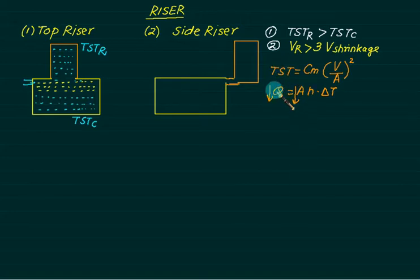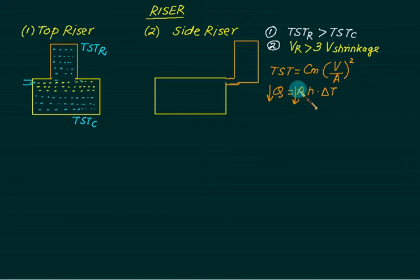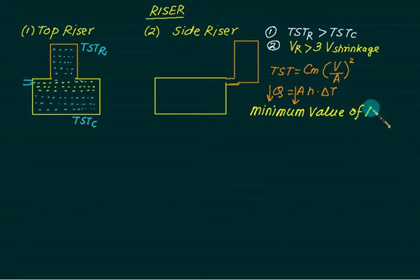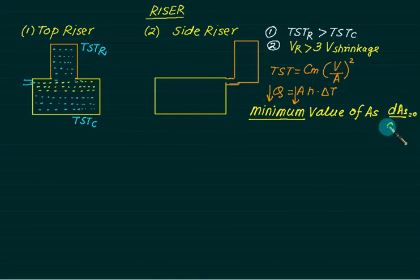The heat transfer rate should be as small as possible. For heat transfer to be small, TST will be large. For larger TST, we need a lower value of Q and a lower value of area. So the criteria for riser design is minimum surface area. In mathematics, minimum means dA/dS equals zero with respect to some parameter — whether it depends on diameter or height. That variable we will decide. The objective function is clear; first we will go for the top riser.